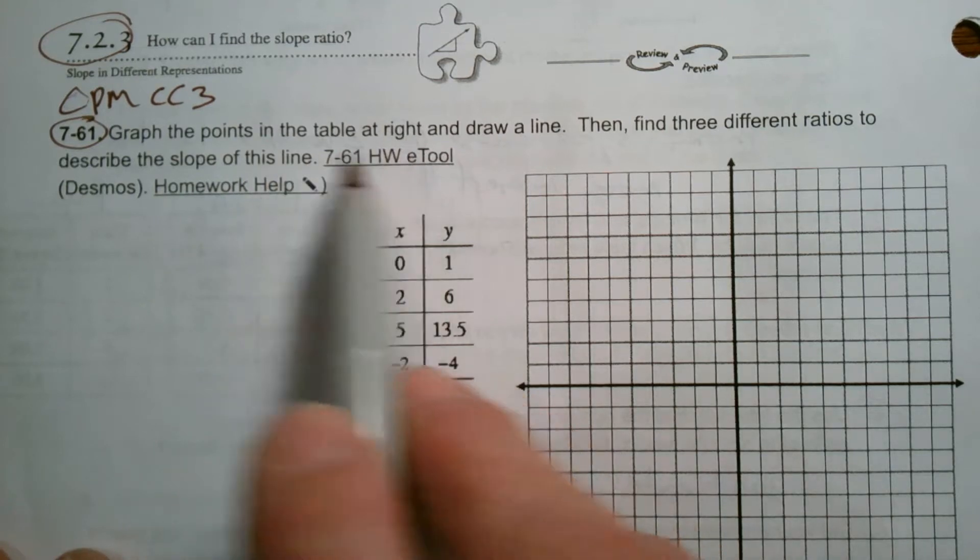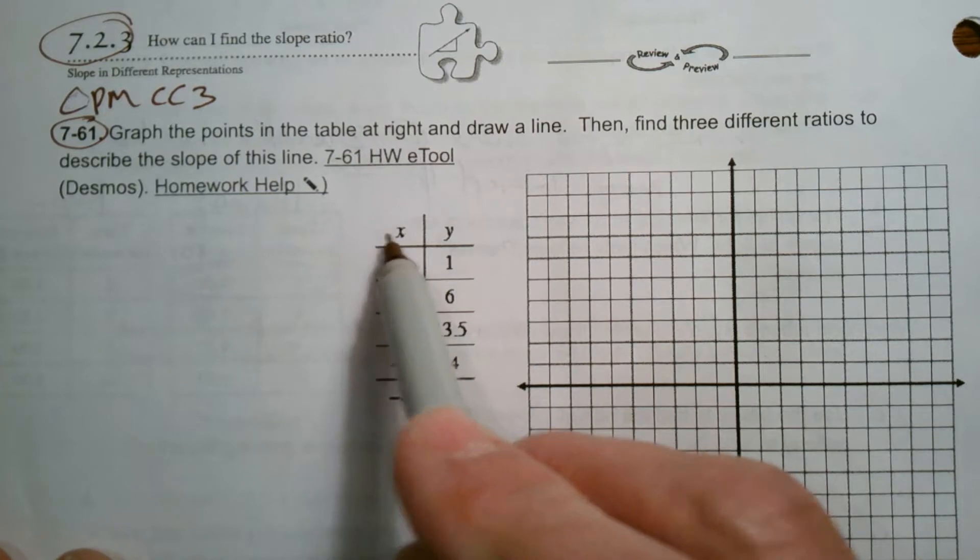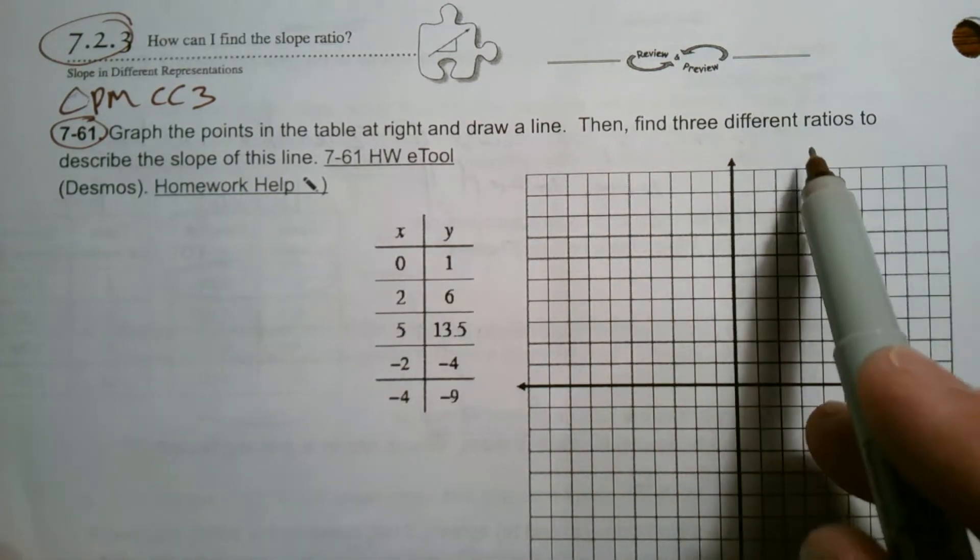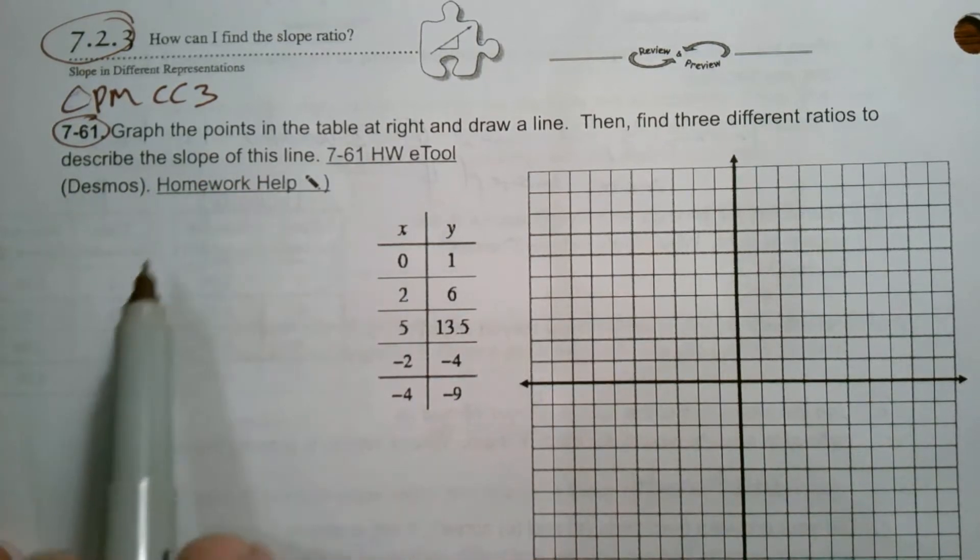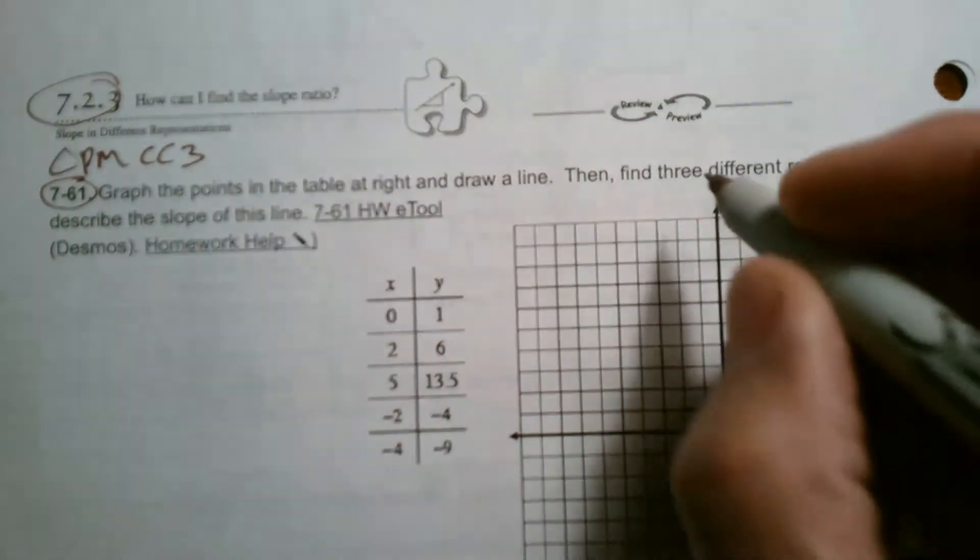It says graph the points in the table at right and draw a line. So here's my table of values, my X, my Y. Then it says, then find three different ratios to describe the slope of the line. So first of all, let's graph these points.